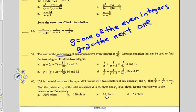Two consecutive even integers. They're saying the sum of their reciprocals, so the reciprocal of G is 1 over G, and the reciprocal of G plus 2 is 1 over G plus 2. They want that sum to equal 11 sixtieths.